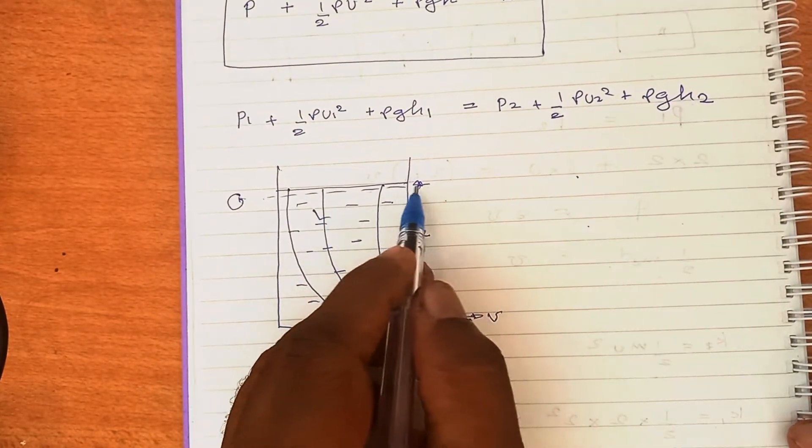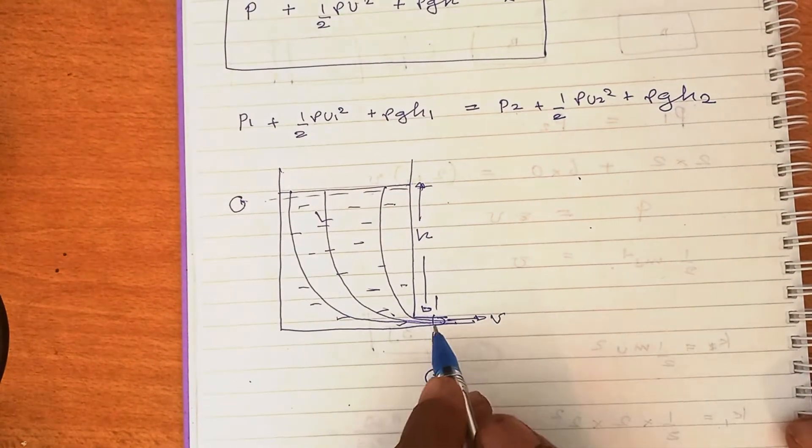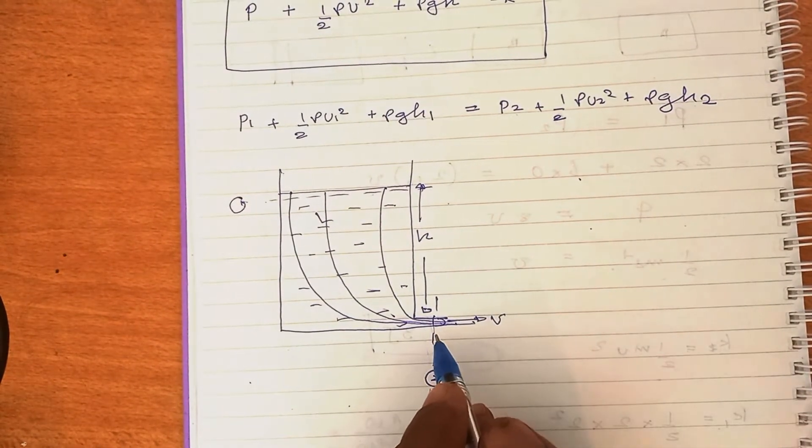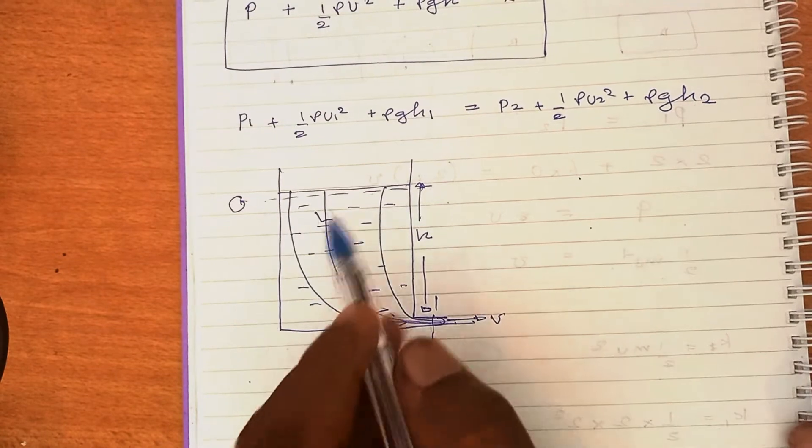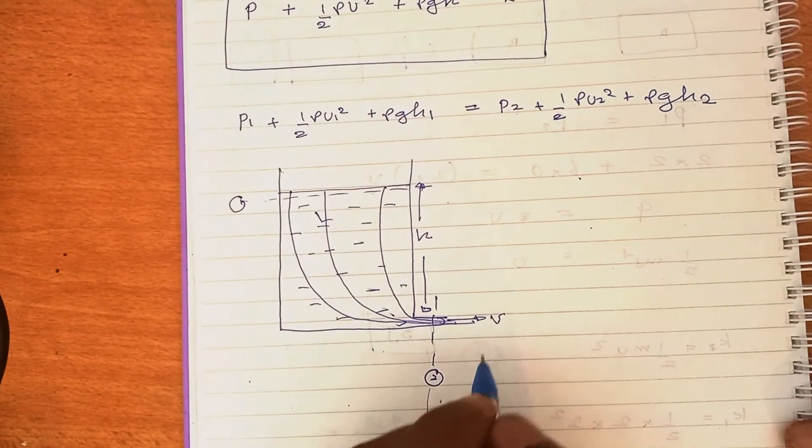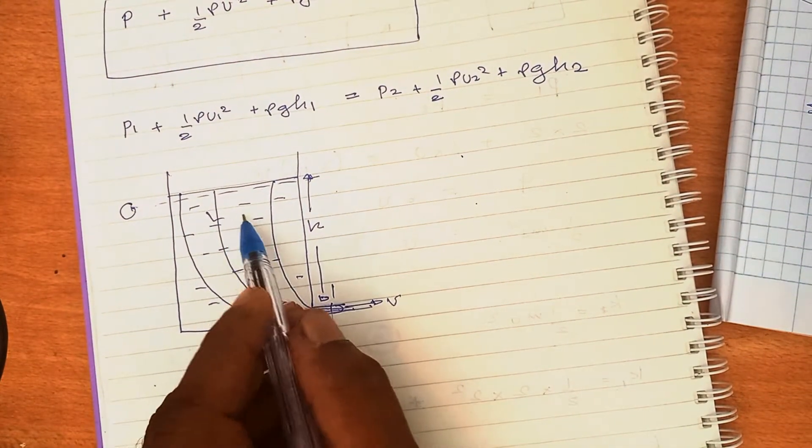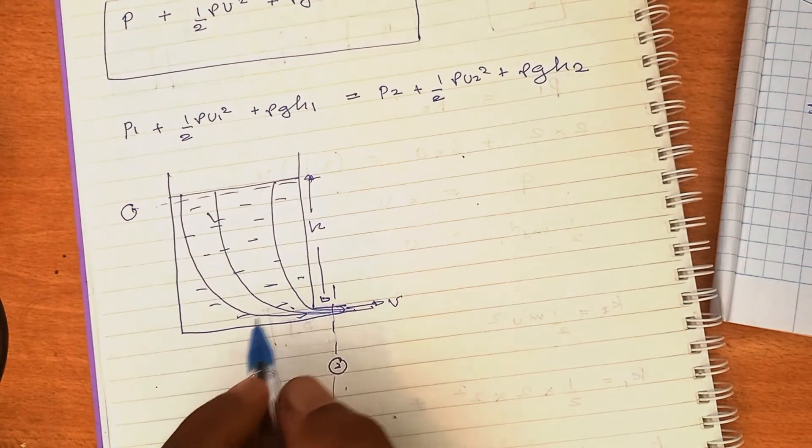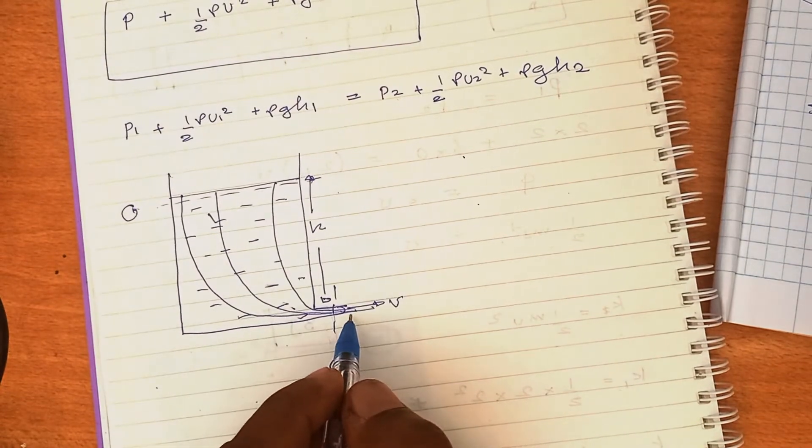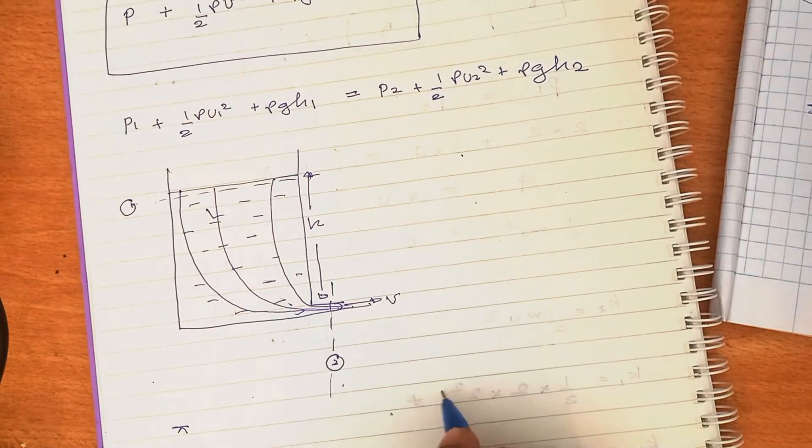P₁ is the pressure at cross section 1 and P₂ is the pressure at cross section 2. Both cross section 1 and cross section 2 are exposed to the atmosphere, so the pressure both at 1 and 2 are equal to atmospheric pressure Pᵢ. P₁ = Pᵢ, P₂ also Pᵢ.